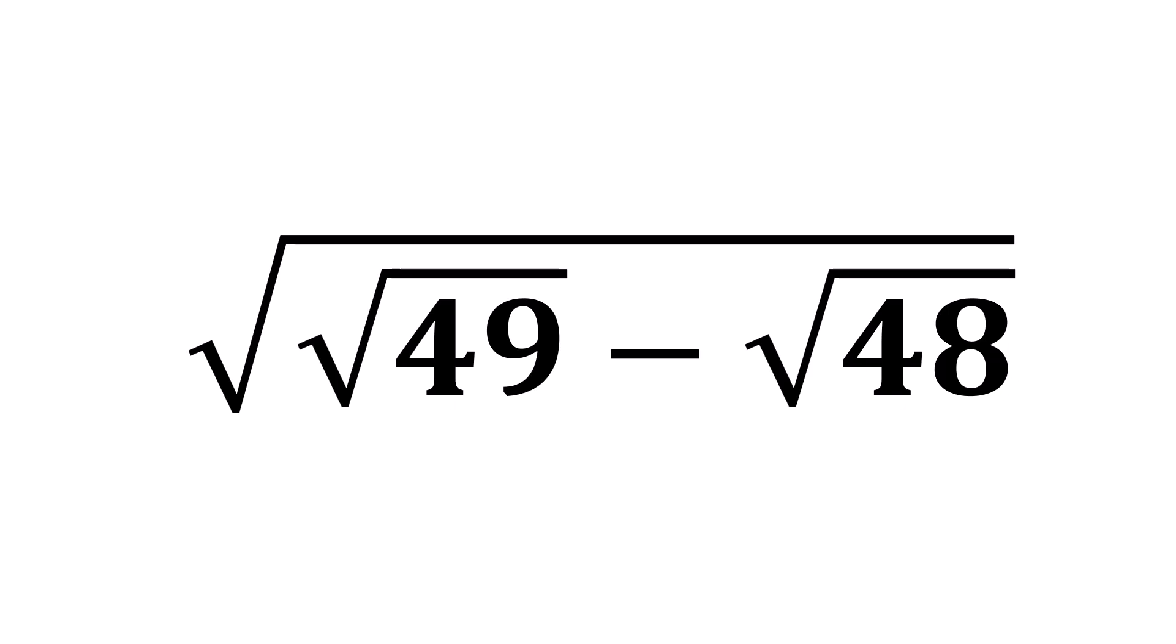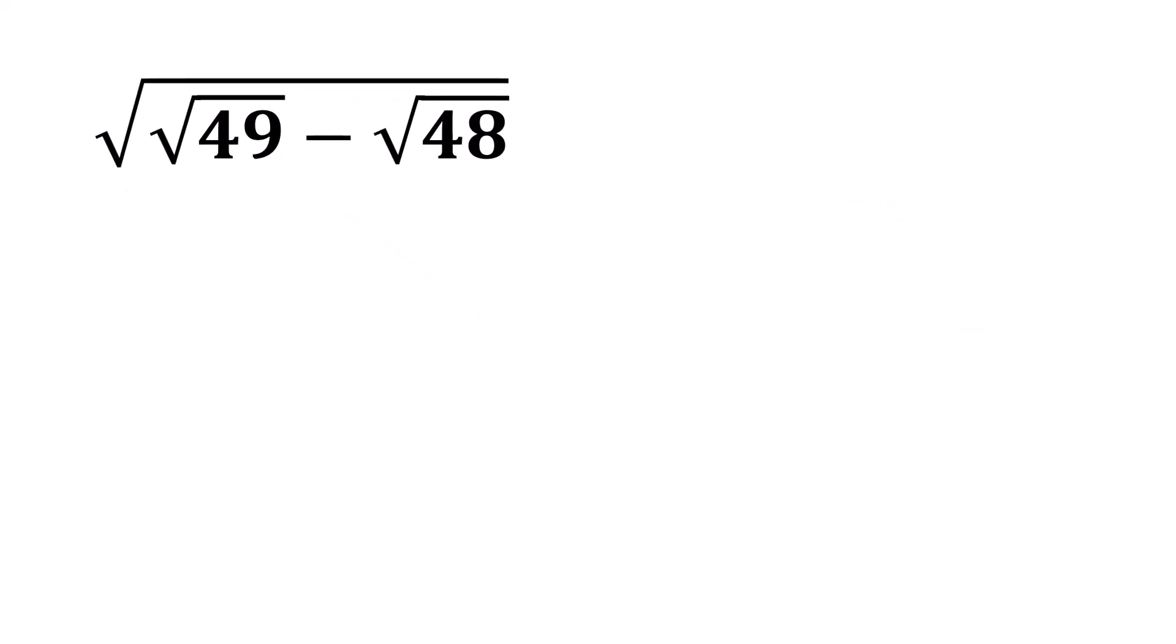The square root of the square root of 49 minus the square root of 48. The square root of 49 is 7, and 48 can be written as 16 times 3.